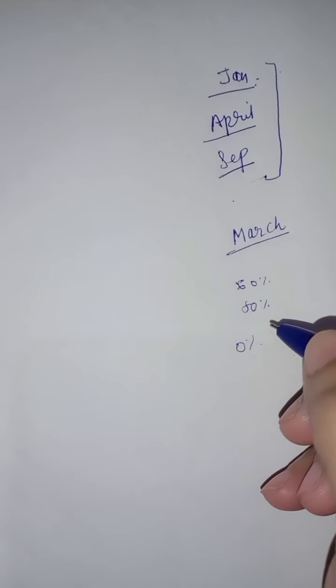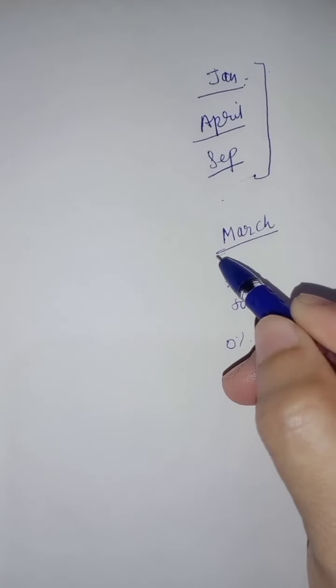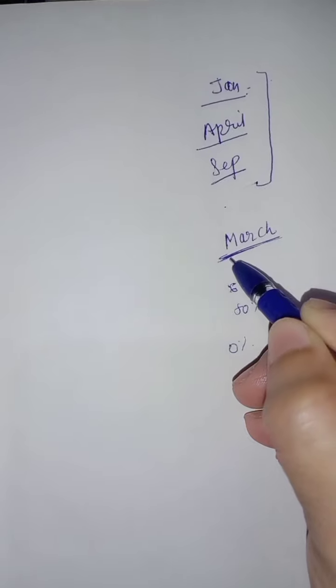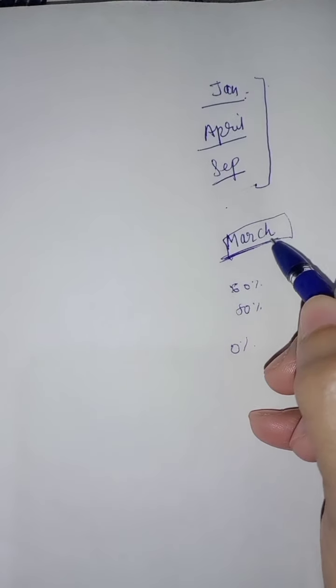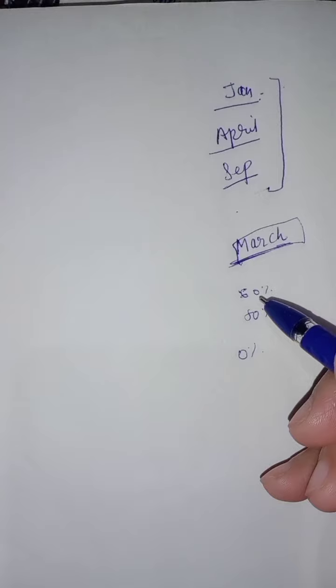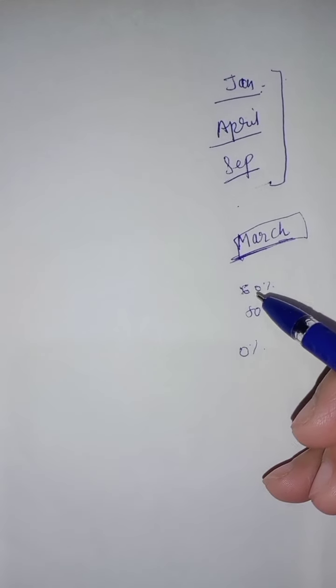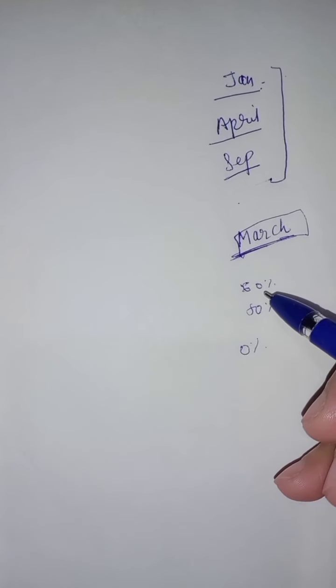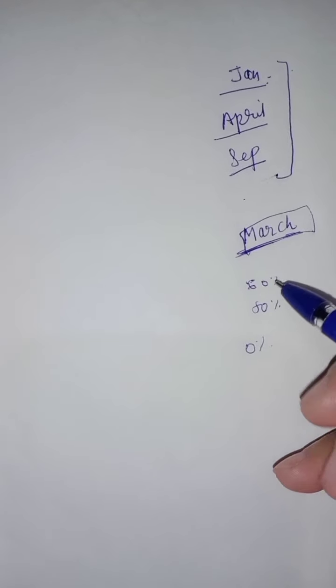But if we think it's not in March, then we'll study zero percent. At least whatever is happening, you should study that much. Keep March as your deadline - you have to complete your course by March. I had told you that I'll start a series.